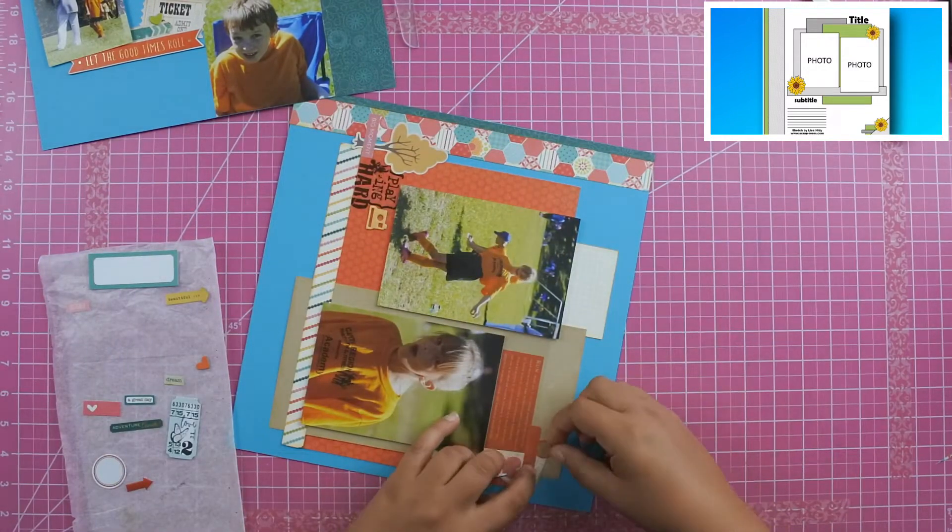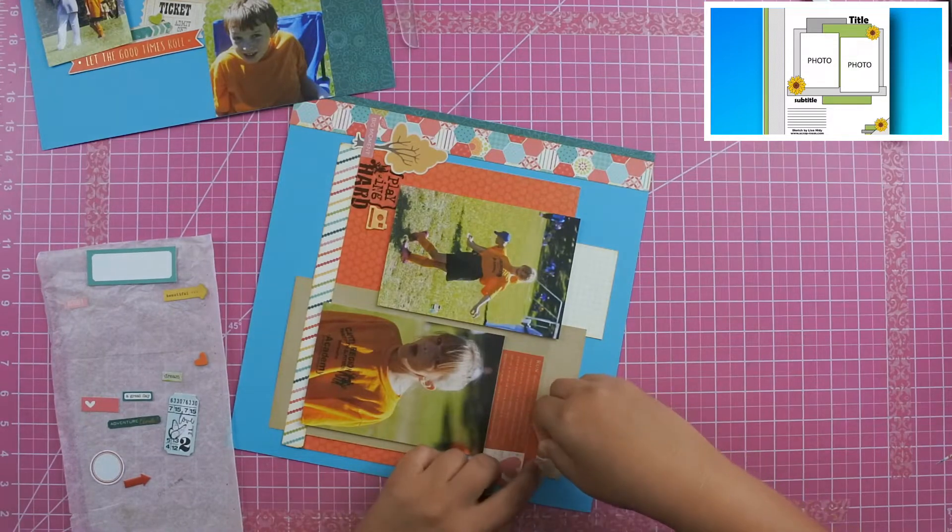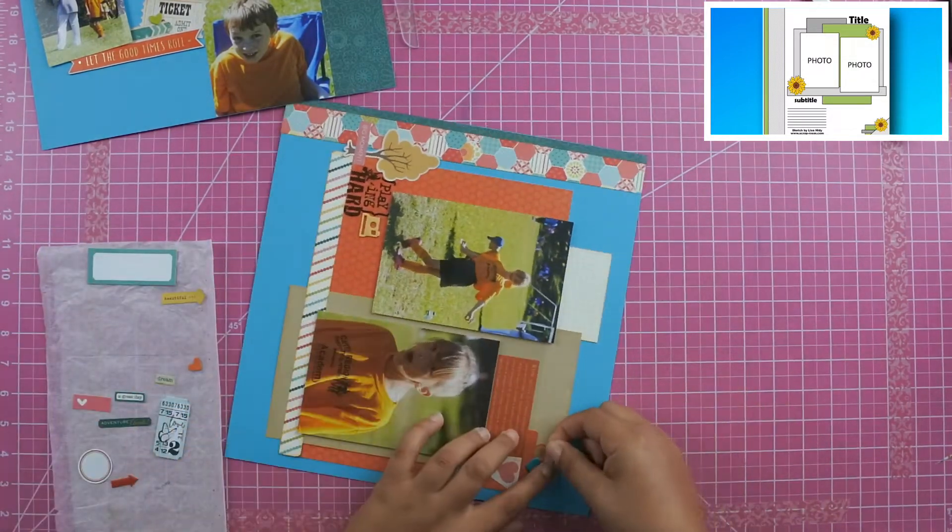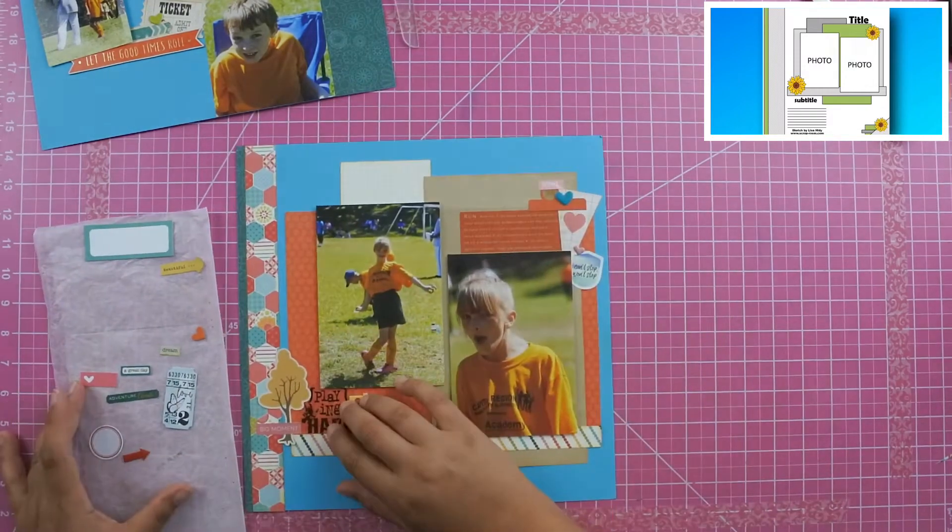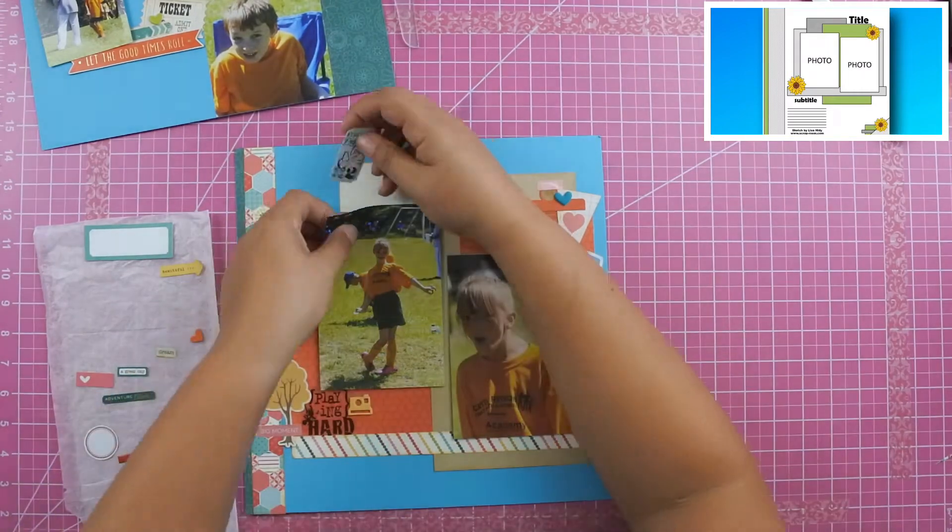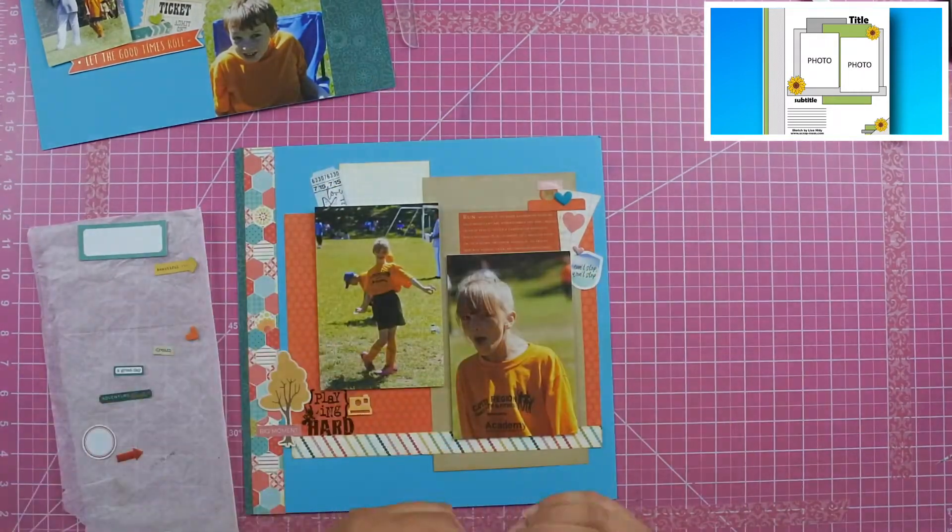I added a banner with a little heart on it, and then a tag or a tab at the top and a little blue sticker. Then that piece down there with the clouds says Can't Stop Won't Stop, which I thought was perfect for the layout.